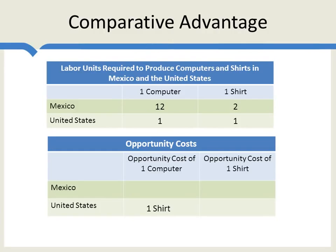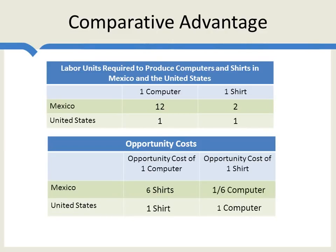The opportunity cost of a shirt in the United States is one computer. Now for the slightly harder case: what's the opportunity cost of one computer in Mexico? In Mexico, to get an additional computer, you'd transfer labor from shirt production into computer production. You need to transfer 12 units of labor. Since it takes two units of labor to produce one shirt, moving 12 units of labor means the opportunity cost of one computer is six shirts. Going the other way, in order to get an additional shirt in Mexico, you'd have to give up one-sixth of a computer.